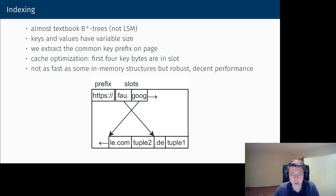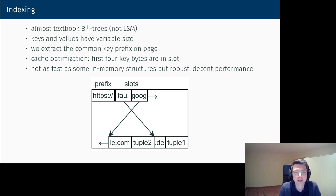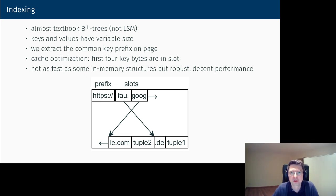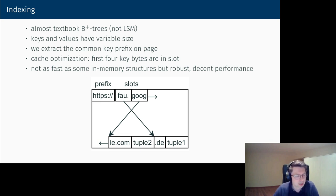For data structures we've always used B-trees — specifically an almost-textbook B+ tree. I don't believe LSM trees are the best default solution for most workloads — they may have use cases but B+ trees are what we use. We support variable-length keys and values.